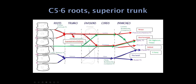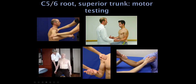Brachioradialis is C5/C6, with nerve fibers traveling in that direction. Key muscles to evaluate in a C5/C6 radiculopathy or superior trunk plexopathy include: deltoid, infraspinatus (external rotation — patient pushes out with wrists against examiner's hands), supraspinatus, biceps (C5/C6), and brachioradialis. If the patient tries to move their thumb to their shoulder, you can see the brachioradialis muscle here — it works with the biceps for elbow flexion.